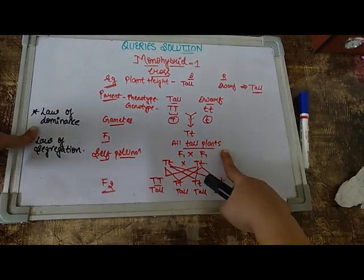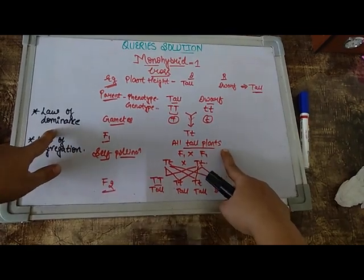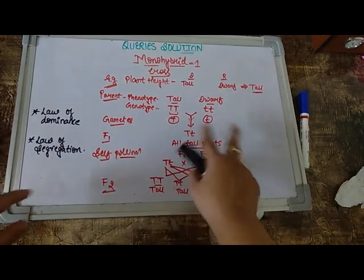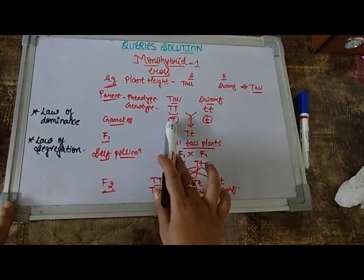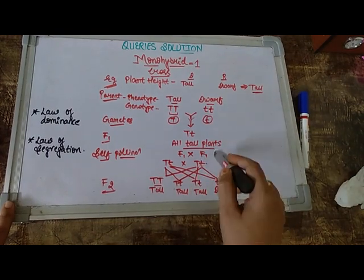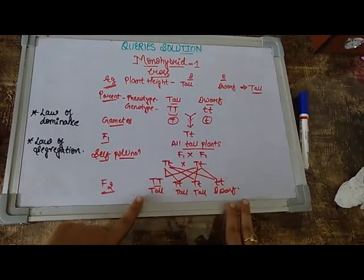Based on this he proposed a law. What's the law? The law is the law of dominance. Now as I think you can be able to relate with the term which is being mentioned dominance. Dominance means when there is a fusion which is made between a dominating and a recessive characteristic, only the dominating one is able to express itself in the next generation. So that's what is being mentioned in the law of dominance.